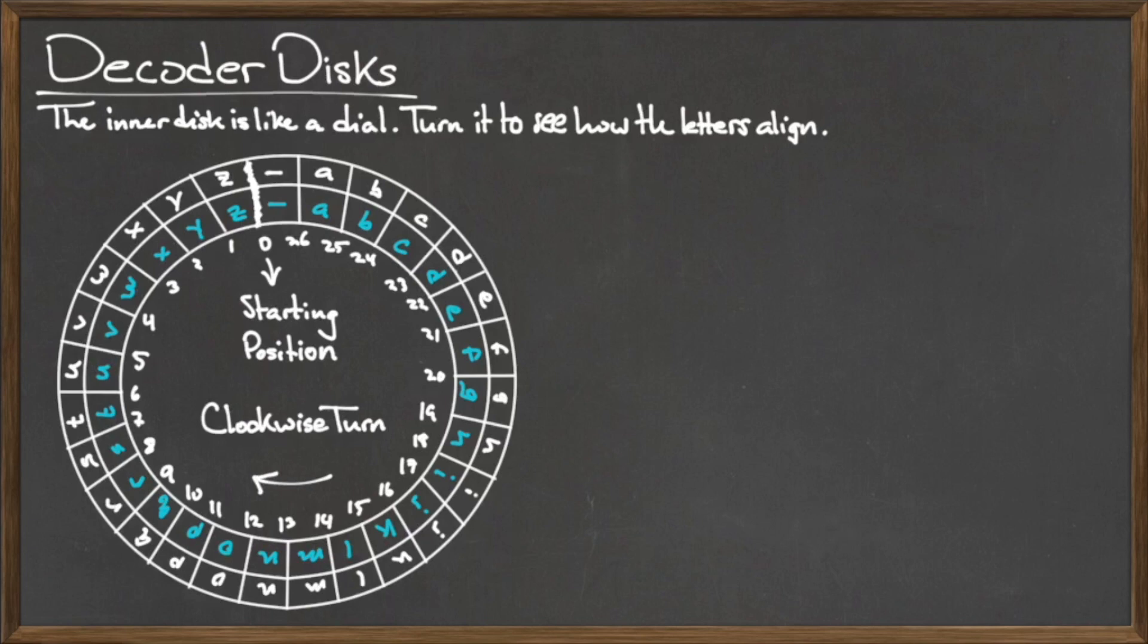The outer disk is fixed and does not move, while the inner disk can rotate freely to shift the characters by the required number of spaces. We use the outer disk to represent the characters of the plaintext message, and we use the characters of the inner disk to represent the ciphertext.